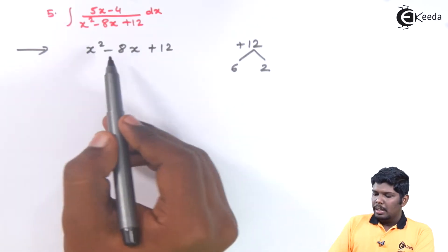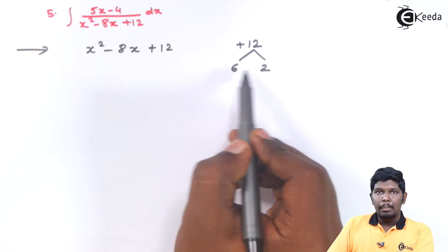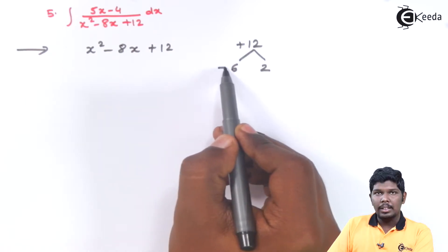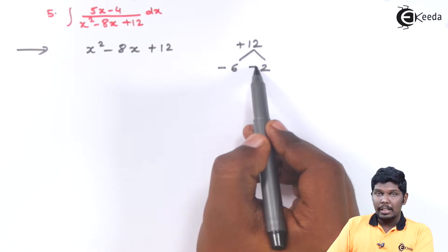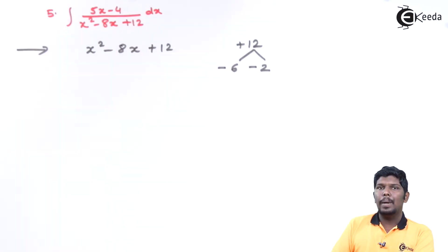Now talking about the signs, the middle sign goes to bigger number. Bigger number is 6 therefore we have minus. And since the product is positive, 2 will also have minus sign, as minus into minus will only give you plus.